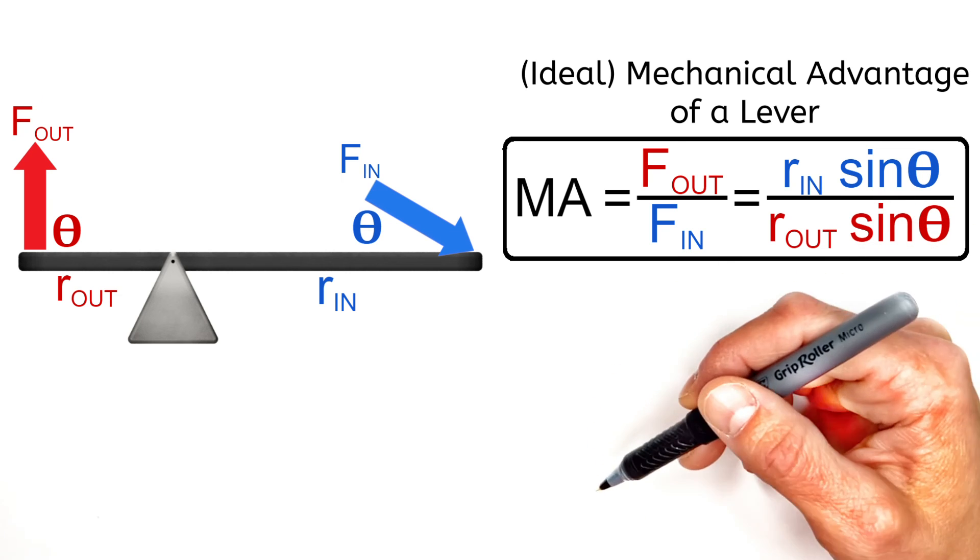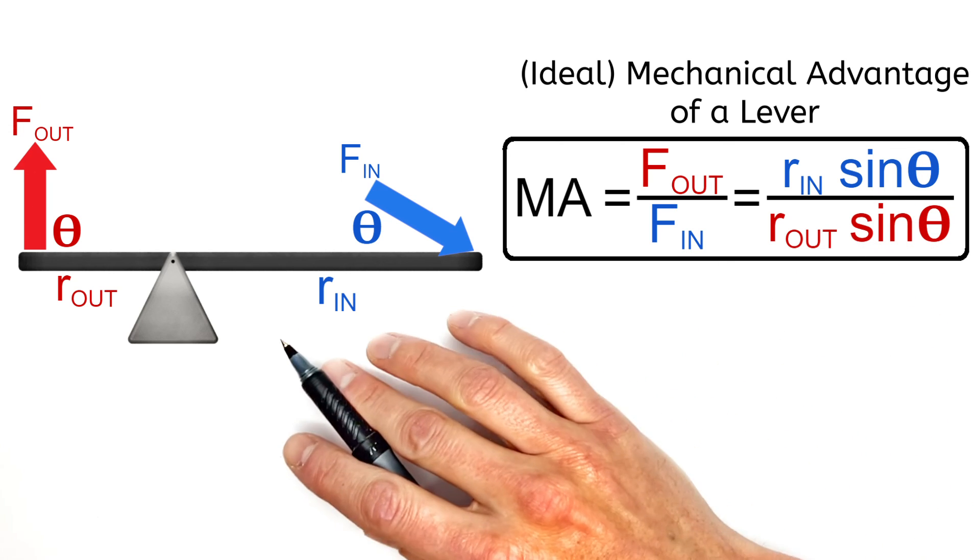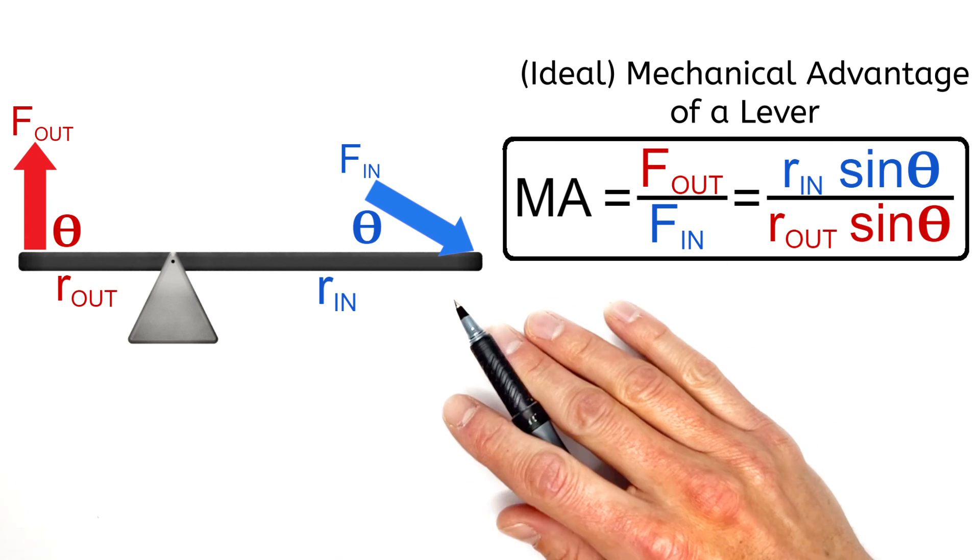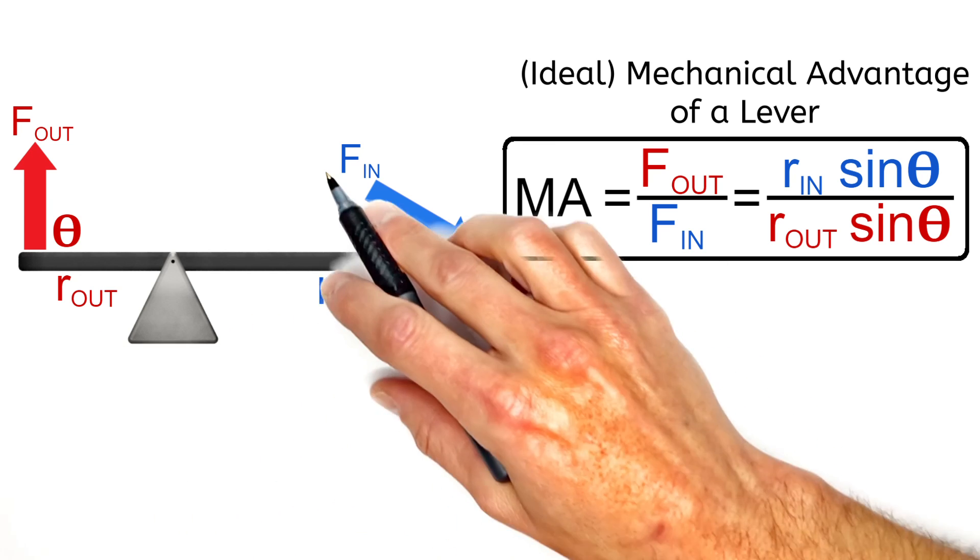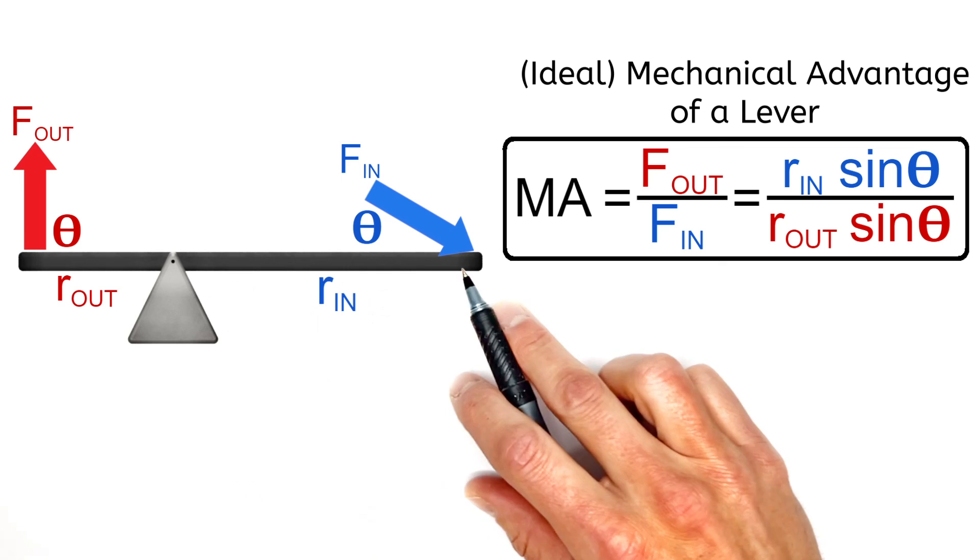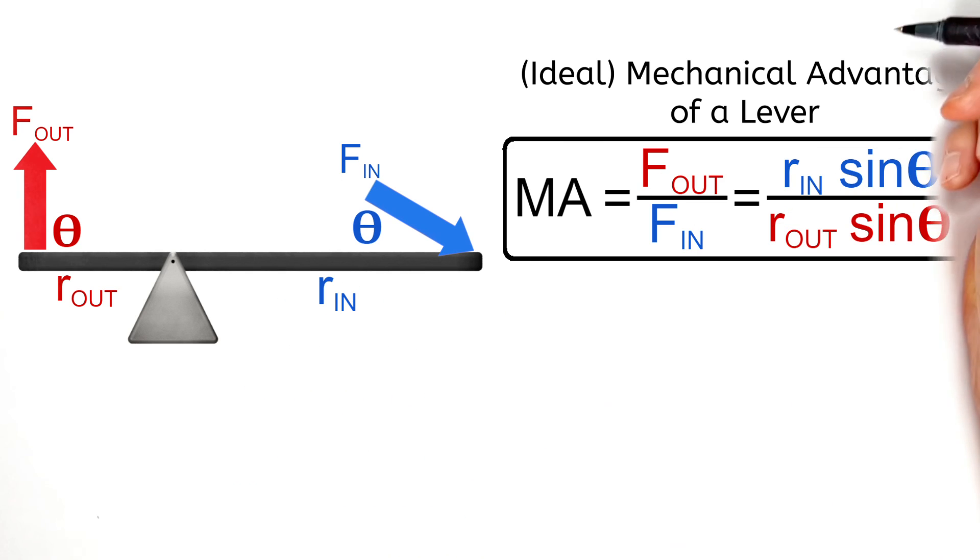But down in the description, I'll link my videos on compound machines, torque, and something called the effective moment arm, which is another way to look at what happens when a force acts at an angle relative to a lever. So I hope you found this useful, and that's all for now.